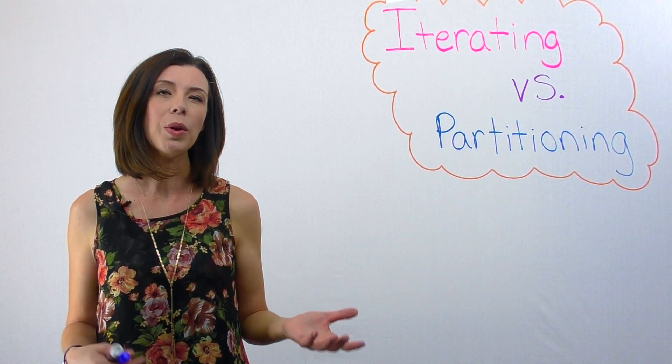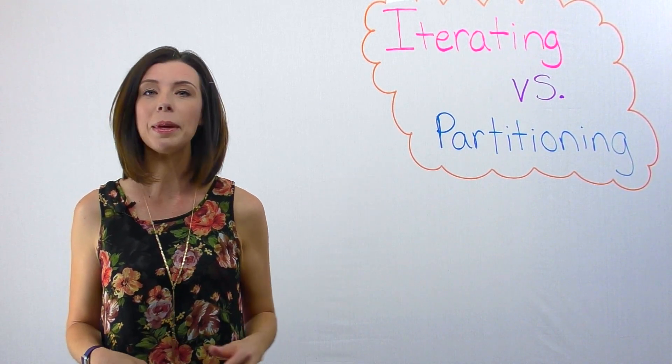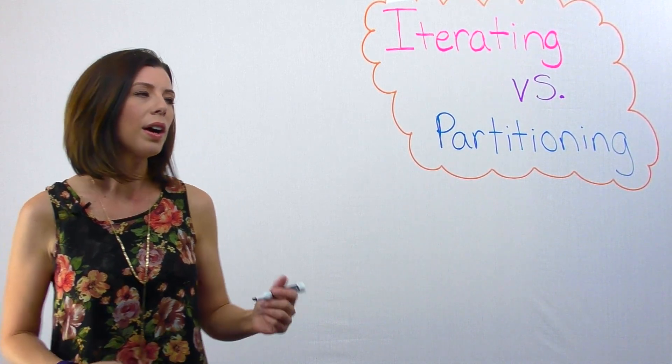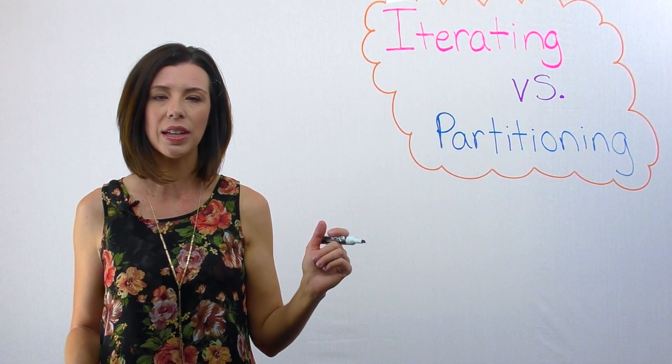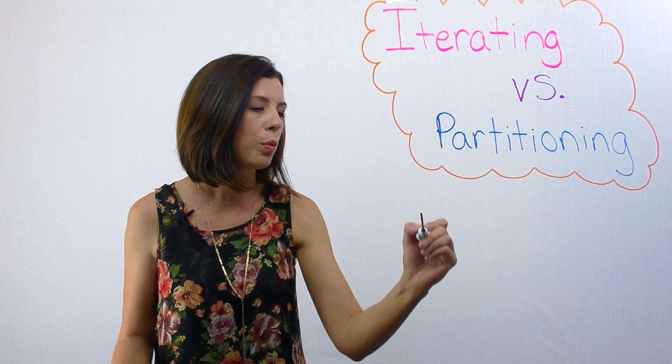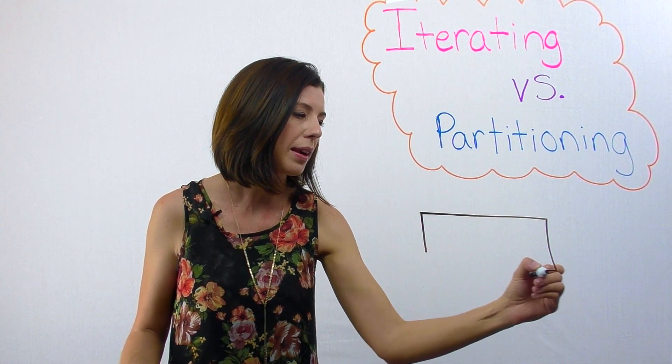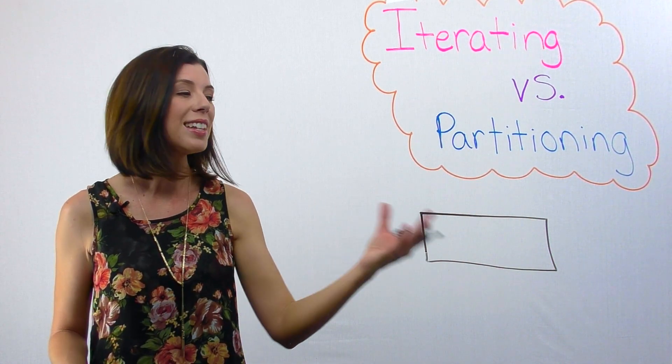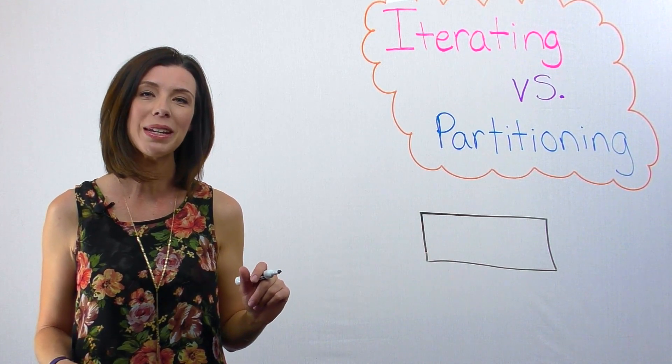Let's start with probably the one you're most familiar with, and that would be partitioning. If I want to know what 5/6 looks like, I can take my whole, whatever that is—let's say it's this rectangle—and I can partition this into six equal pieces.